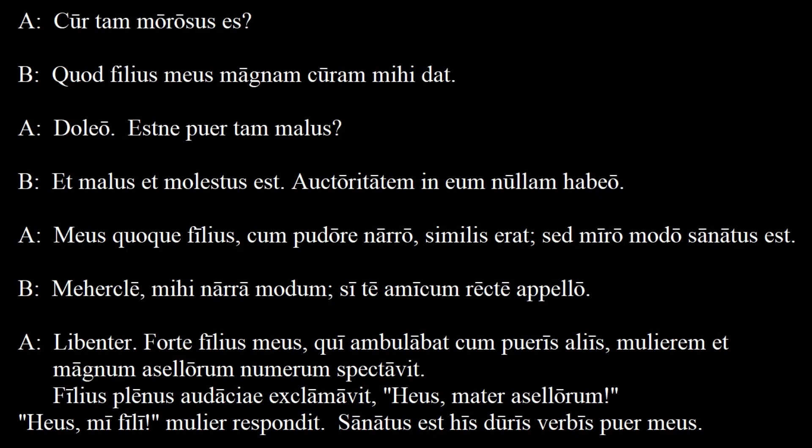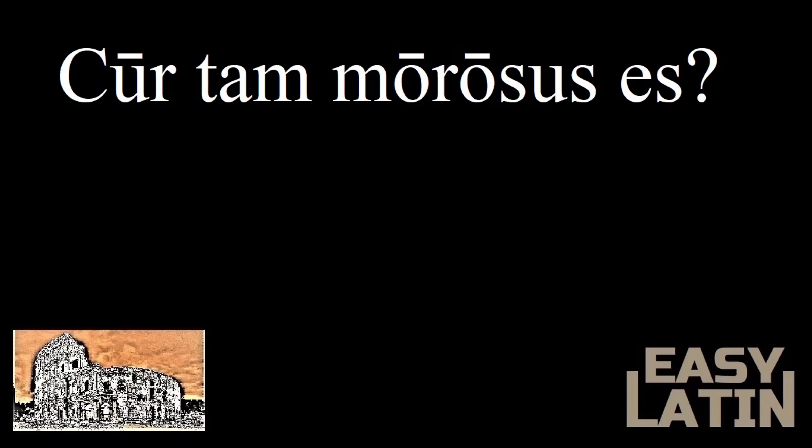Did you understand everything? If not, let's go through the dialogue together. The first sentence was: Cur tam morosus es? Most of the WH words turn into QU words in Latin, but a few begin with a C, like cur, which means 'why.' And tam is used when making comparisons. This first sentence means: Why are you so morosus, or peevish?